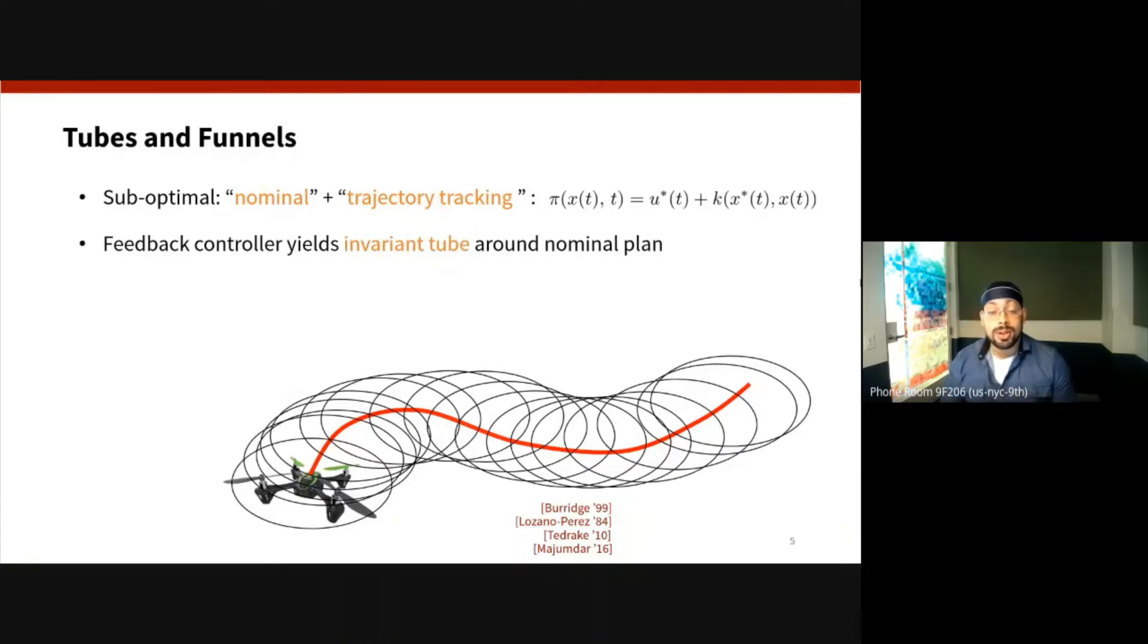And so this feedback controller comes with a guarantee that your state will remain in this invariant tube-like region as you're tracking the paths even in the presence of disturbances.